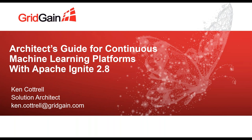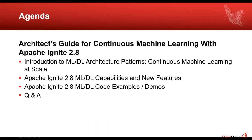Thank you all for joining. Here's a quick agenda: I'll be talking about some architectural patterns and blueprints to use for continuous machine learning at scale, and then I'll also be discussing some of the updates with Apache Ignite — the 2.8.x series — especially focusing on the machine learning capabilities and features, and I'll show some code.